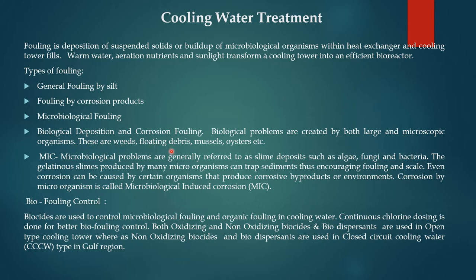Large organisms include weeds, floating debris, mussels, and oysters. Microbiological-induced corrosion (MIC) refers to microbiological problems generally described as slime deposits such as algae, fungi, and bacteria. Due to sunlight, algae, fungi, and bacteria will grow. The gelatinous slime produced by many microorganisms can trap sediments, encouraging fouling and scale, and corrosion can be caused by certain organisms that produce corrosive by-products.